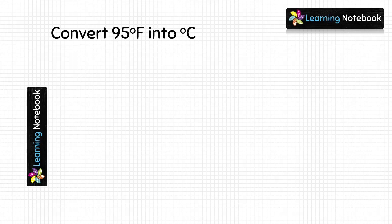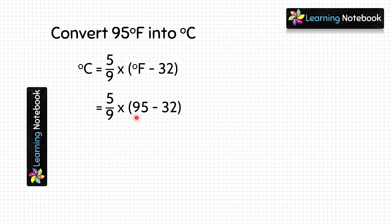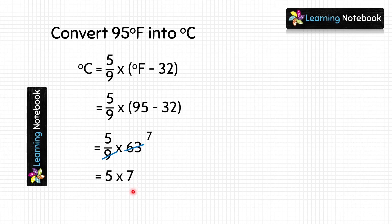Next question: convert 95 degree Fahrenheit into Celsius. Using the formula: 5/9 × (95 − 32). The subtraction gives 95 minus 32 equals 63. So we get 5/9 × 63, which simplifies to 5 × 7 equals 35. The answer is 35 degree Celsius.